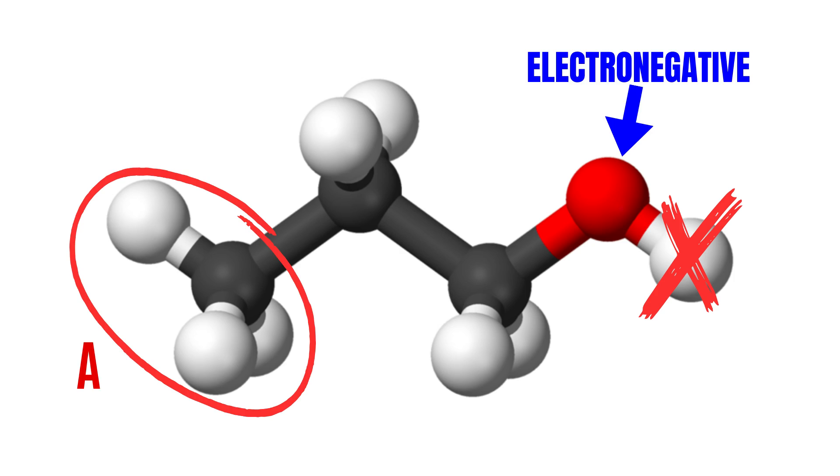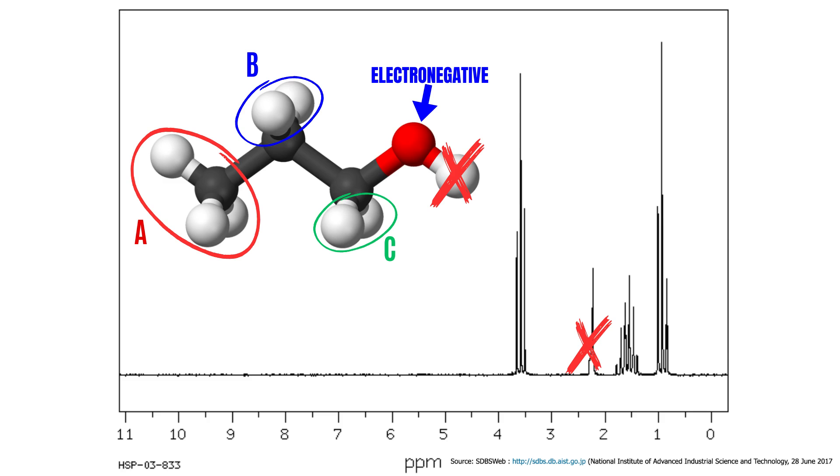For the other hydrogen groups, we can note that they will be slightly different based on their distance to the alcohol group, which is the most electronegative element in this example. Group A is the furthest away and will therefore be the least chemically shifted, followed by group B in the middle, and finally group C which is the closest to the alcohol group and therefore the most chemically shifted. In other words, there will be three different NMR signals in this example, given that we exclude the hydrogen in the alcohol group.